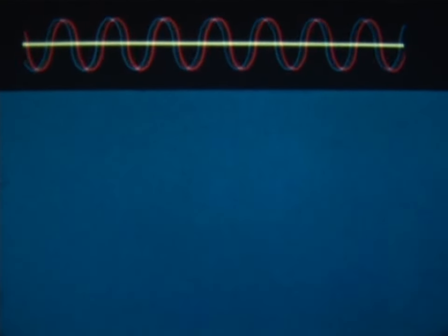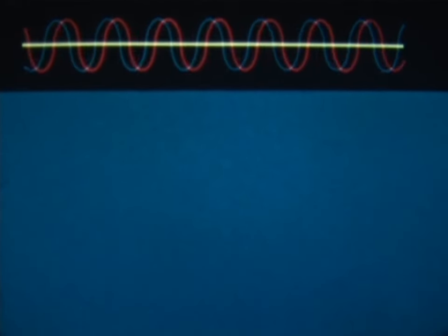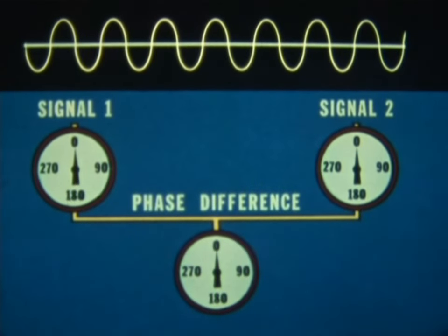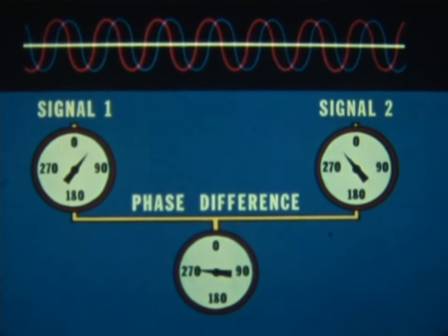To explain phase difference, we'll use sine waves to represent the signals being received. As long as these waves coincide, we can say that they're in phase or that they have a zero phase difference. But as the relationship between the waves begins to change, a phase difference begins to appear.